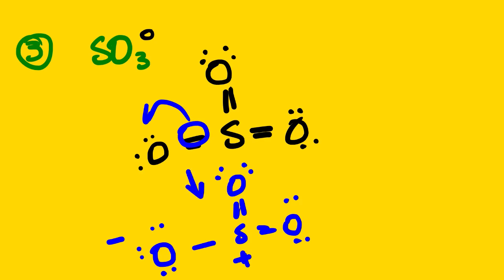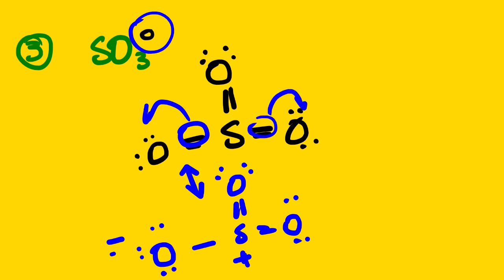By the way, these two are resonance structures. If you take the overall of this negative and positive it will still give you zero. The very same procedure — if we take this pair and bring them to the other oxygen instead of this one — we are going to have another resonance structure.